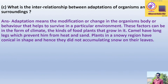Next question: What is the interrelationship between adaptations of organisms and their surroundings? Answer: Adaptation means the modification or change in an organism's body or behavior that helps it survive in a particular environment. These factors can be in the form of climate or the kinds of food plants that grow in it. For example: camels have long legs which prevent them from heat and sand; plants in snowy regions are conical in shape so that snow does not accumulate on their leaves. This is the interrelationship between adaptations of organisms and their surroundings.